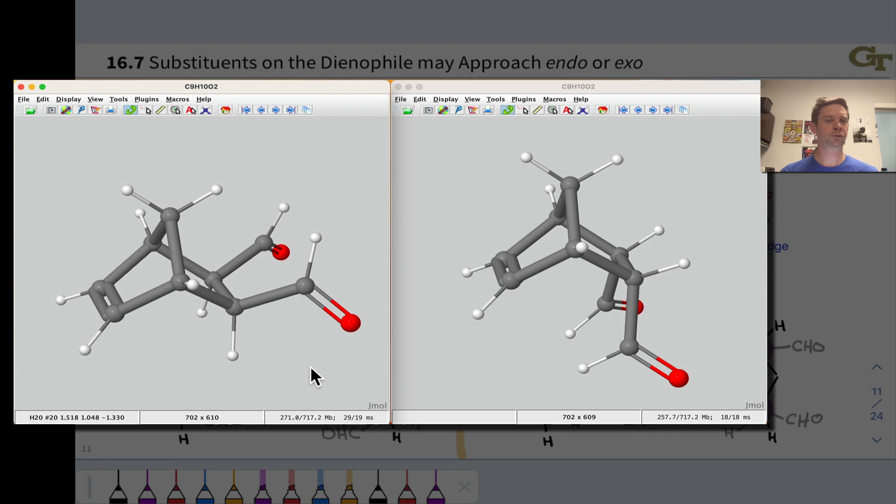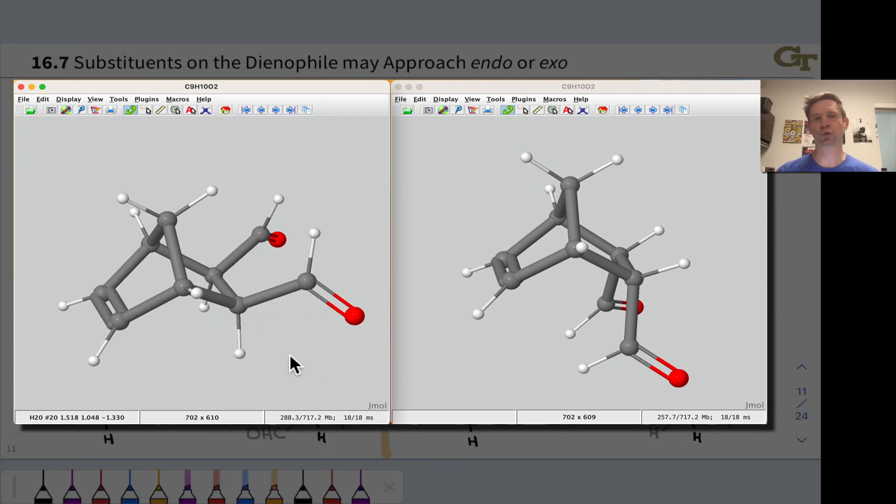And again, all of this flows from spatial analysis of the transition state. So it's not worth memorizing this as a rule or anything like that. We're just looking for stereochemical relationships in the endo and exo products.